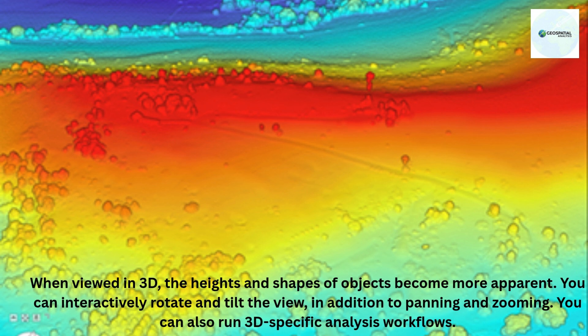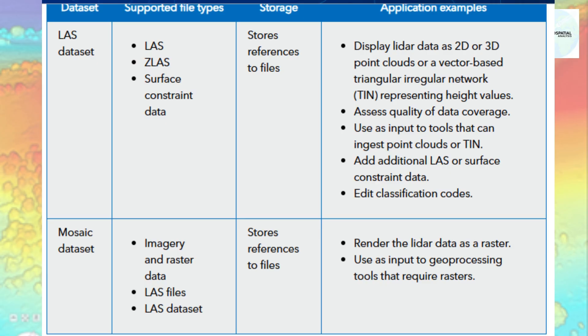To view LiDAR data in 3D, you can either add the data directly to a 3D scene, or if you are already working with the data in a map, you can convert the 2D map to a 3D scene. That does not change the data itself, only the way that you are viewing it. If your LiDAR data is managed in a LAS dataset, you can optimize its 3D display performance by indexing your data in a LAS dataset pyramid structure.